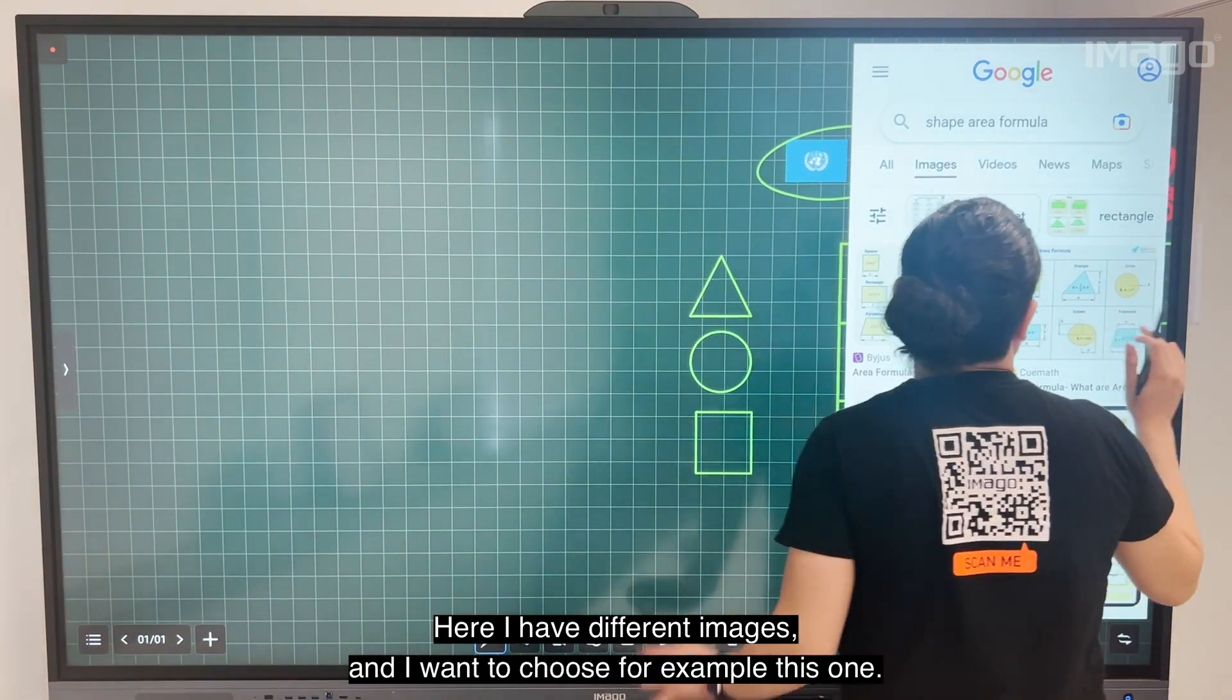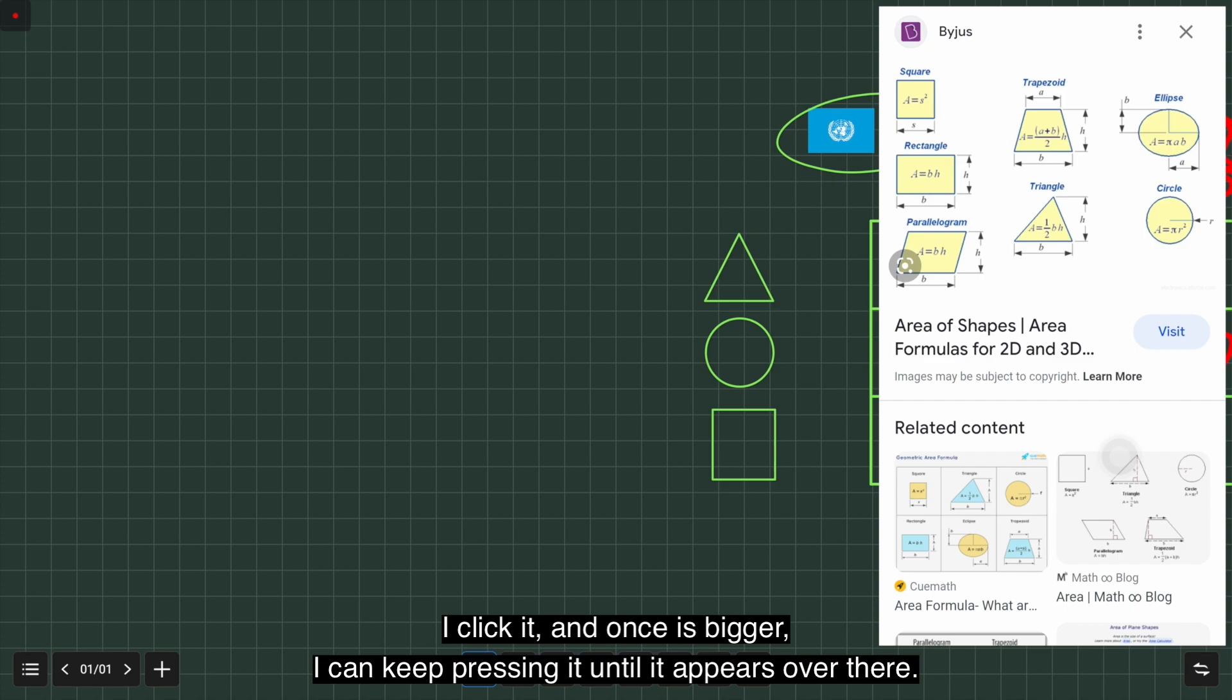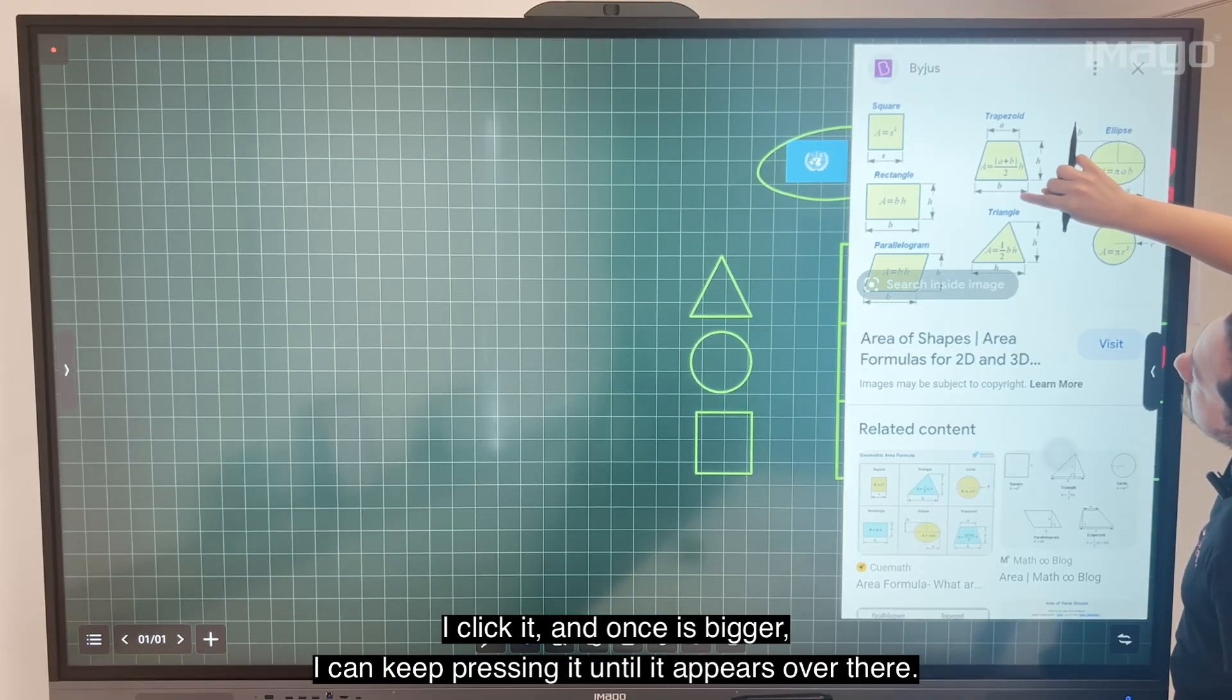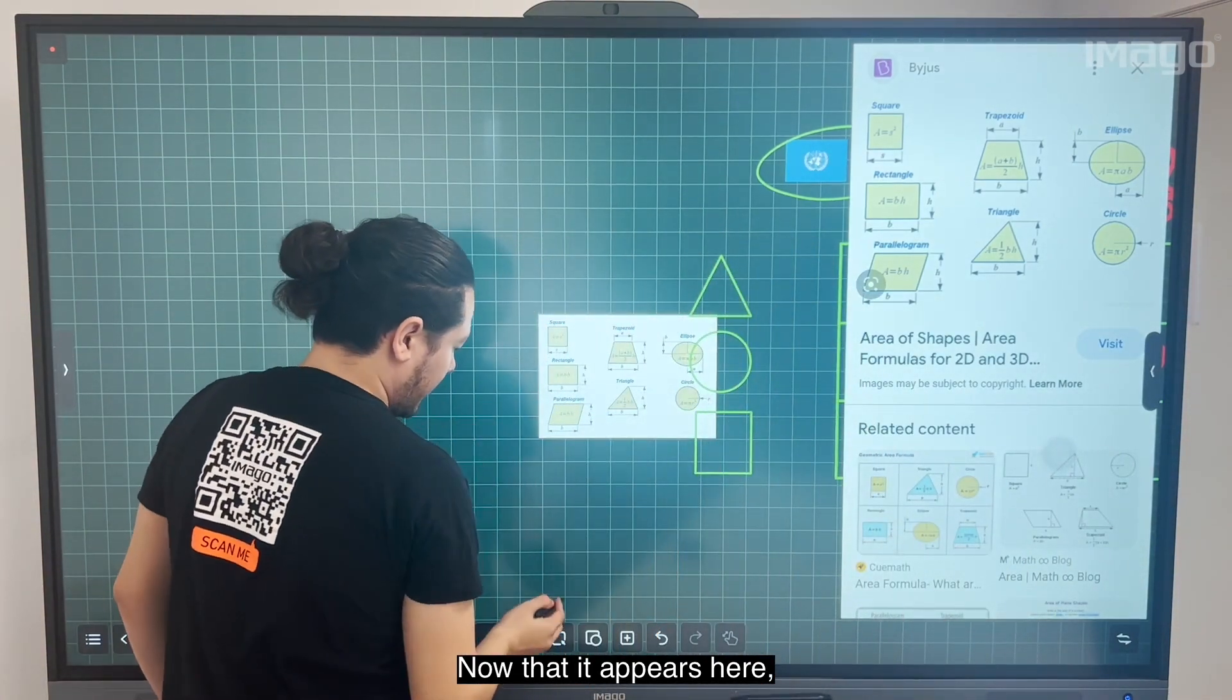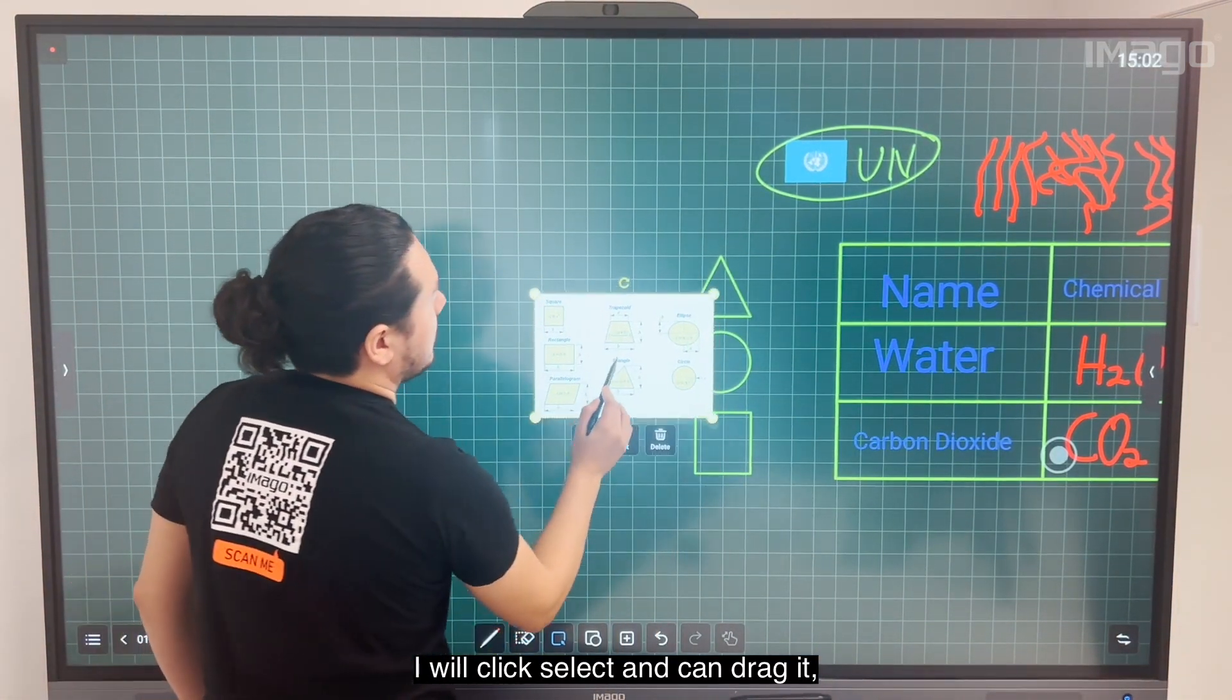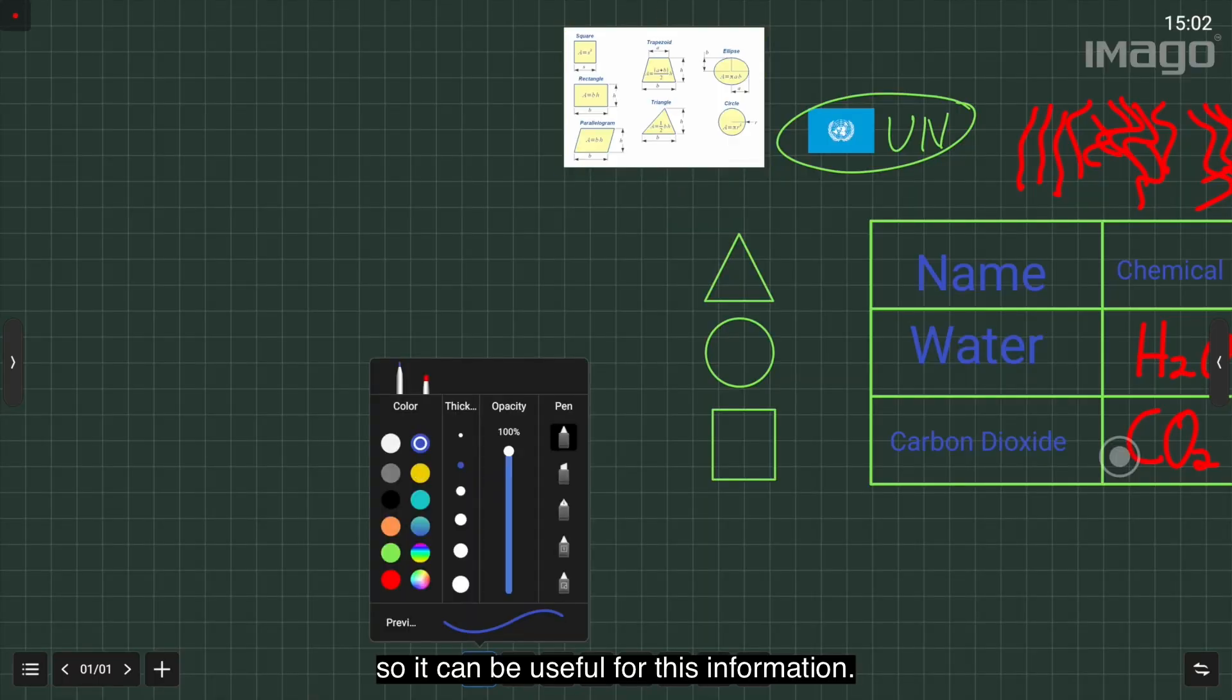For the next point I have the Web Browser. From here I have different images and I want to choose, for example, this one. I click it and once it's bigger I can keep pressing it until it appears over there. Now that it appears here, I will click Select and drag it so it can be useful for this information.